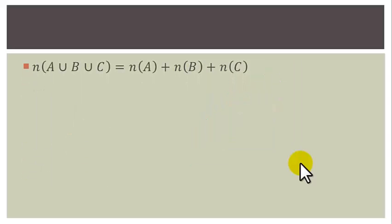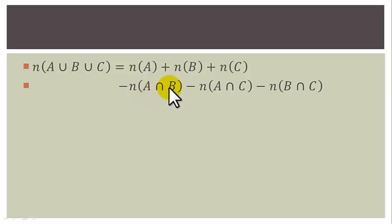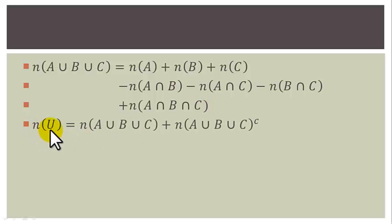The number of elements in A union B union C equals the number of elements in A plus B plus C, minus |A∩B|, minus |A∩C|, minus |B∩C|, plus |A∩B∩C|. And |U| equals |A∪B∪C| plus |(A∪B∪C)-complement|.